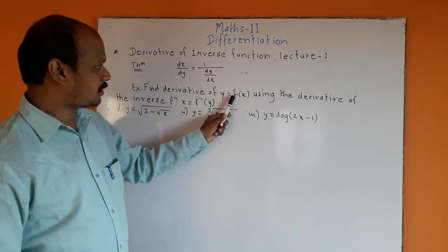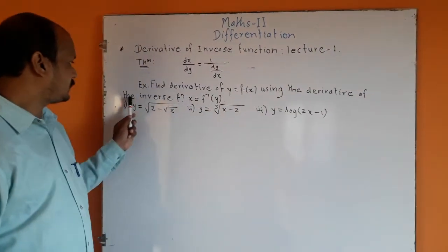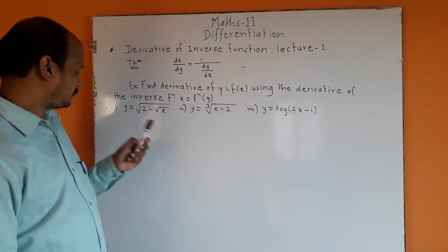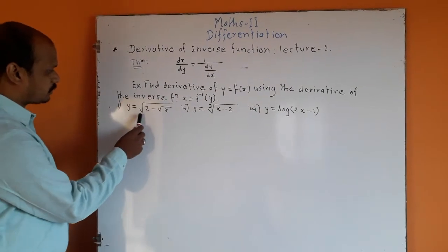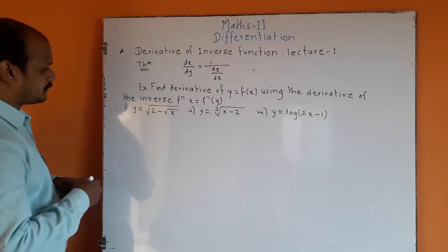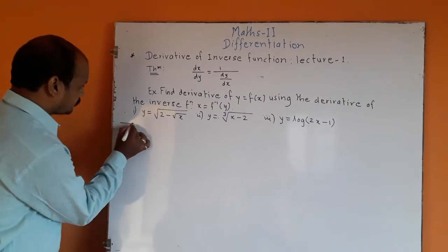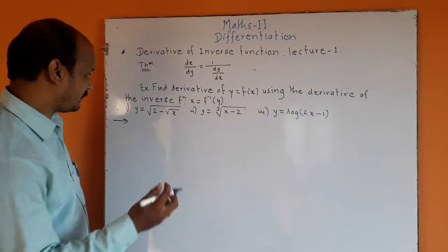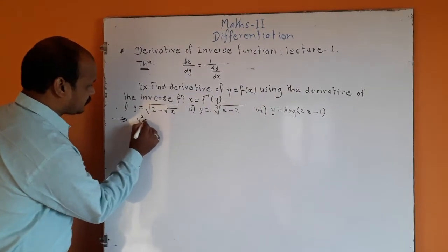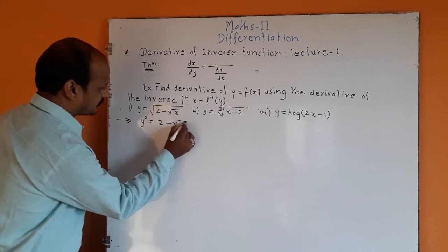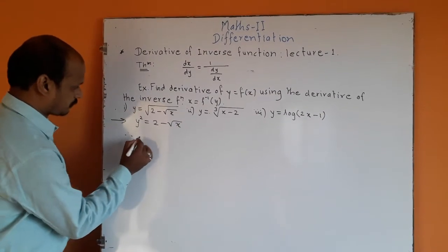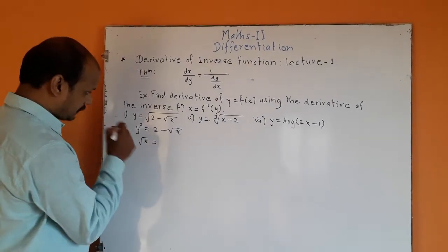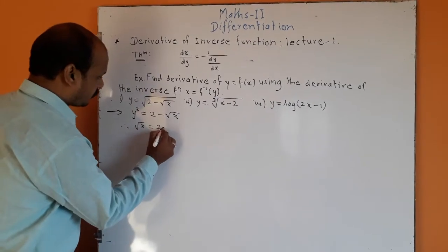Find the derivative of y = f(x) using the derivative of the inverse function, where x = f inverse of y. First example: y = √(2 − √x). We are going to calculate x in terms of y. Squaring both sides, we get y² = 2 − √x. Therefore, √x = 2 − y².